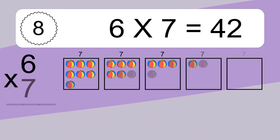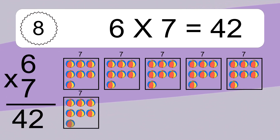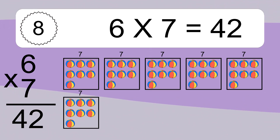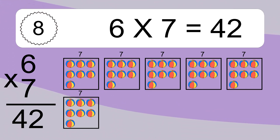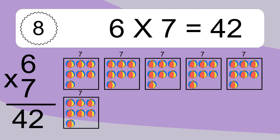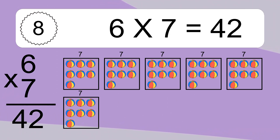6 times 7 equals 42. We have 6 boxes, and each box has 7 colorful balls inside. If you count all the balls in all the boxes together, you will have 6 times 7 balls. This equals 42 balls.